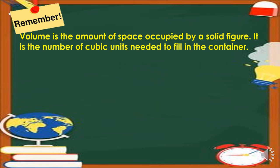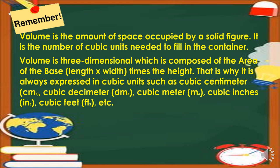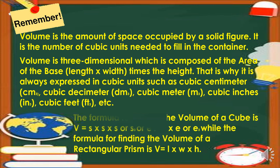Remember that volume is the amount of space occupied by a solid figure. It is the number of cubic units needed to fill in a container. Volume is 3-dimensional — composed of the area of the base (length times width) times the height — and is always expressed in cubic units such as cubic centimeter, cubic decimeter, cubic meter, cubic inches, cubic feet, etc. The formula for a cube is V equals S cubed; for a rectangular prism, V equals length times width times height.